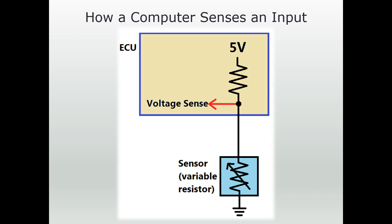Now let's modify this just a little bit. This is the same circuit, but instead of a switch we have a variable resistor — specifically a thermistor that changes resistance as temperature changes. The thermistors we use as sensors in our cars are called NTC thermistors — negative temperature coefficient — meaning as temperature increases, resistance decreases. They have an inverse relationship. So if the fixed resistor in the ECU had 10 ohms, and this sensor resistor at 70 degrees also had 10 ohms, the voltage would be split equally — 2.5 volts dropping across each resistor.